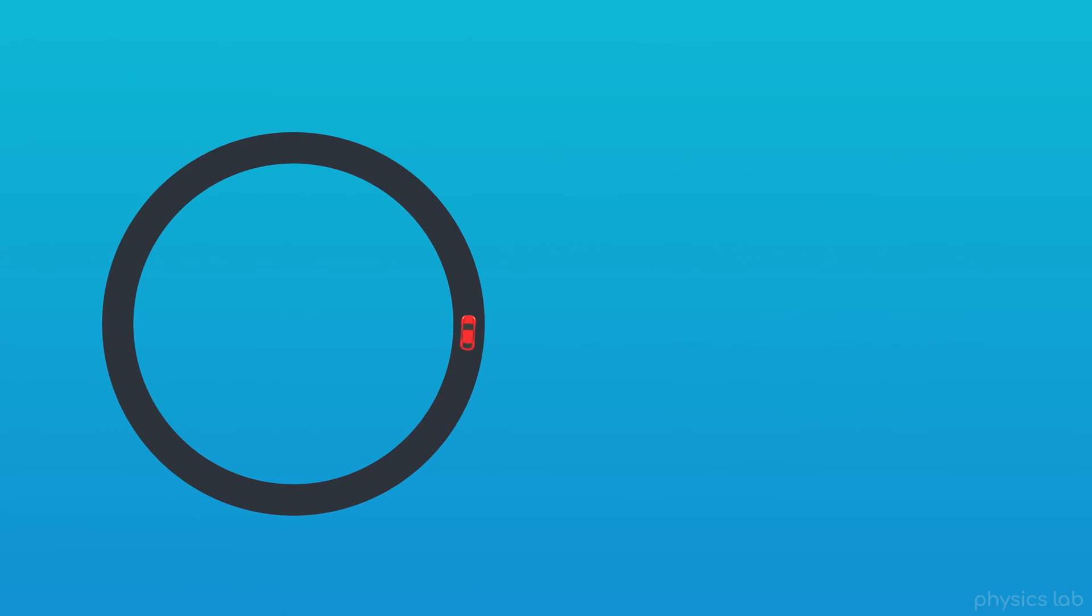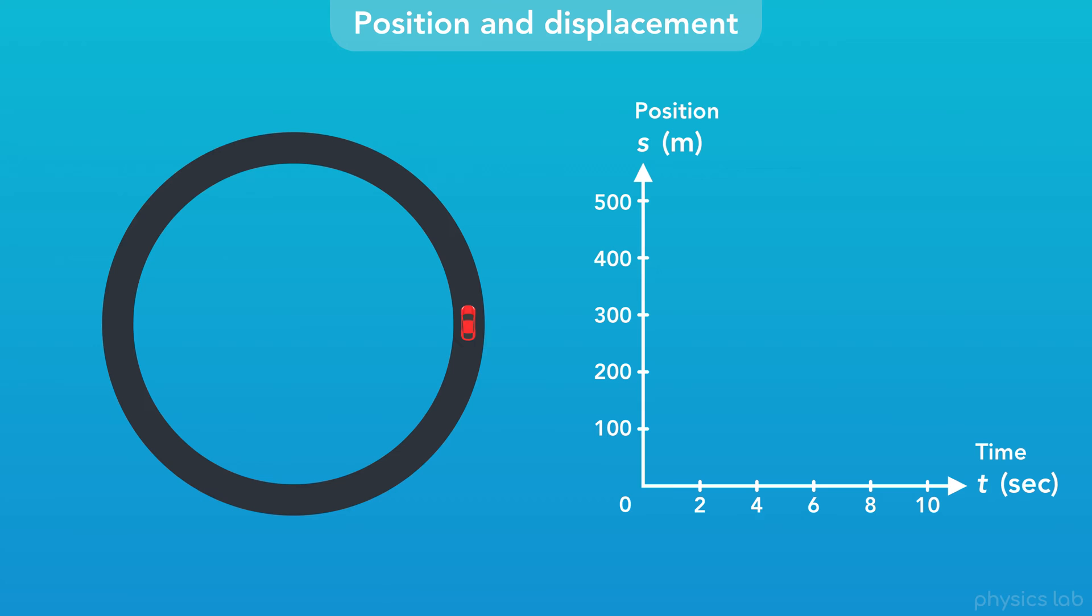We can also visualize things by graphing the circular position of the car over time. After one revolution around this track, the position keeps increasing. It's like the car is driving on an infinite straight road.